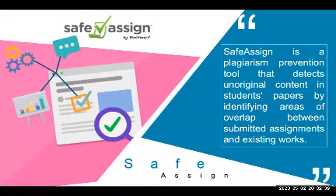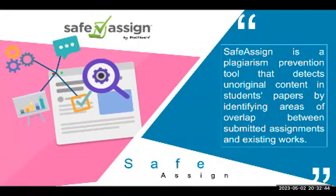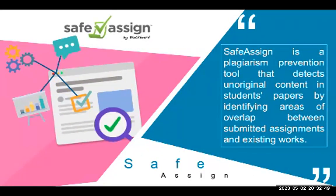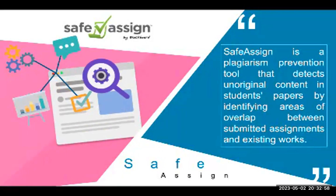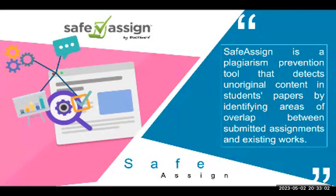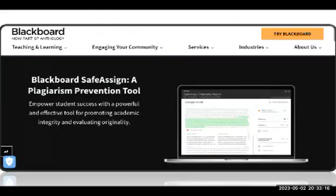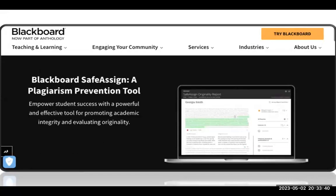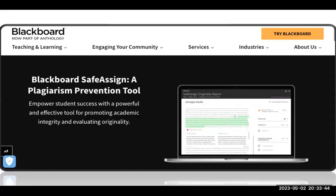SafeAssign is a plagiarism prevention tool that detects non-original content in student papers by identifying areas of overlap between submitted assignments and existing works. It is basically designed for student assignments, but teachers can use it for research as well since it works similarly for both. Blackboard is now part of Anthology, a well-known company in the education sector. SafeAssign empowers student success with a powerful and effective tool for promoting academic integrity and evaluating originality.